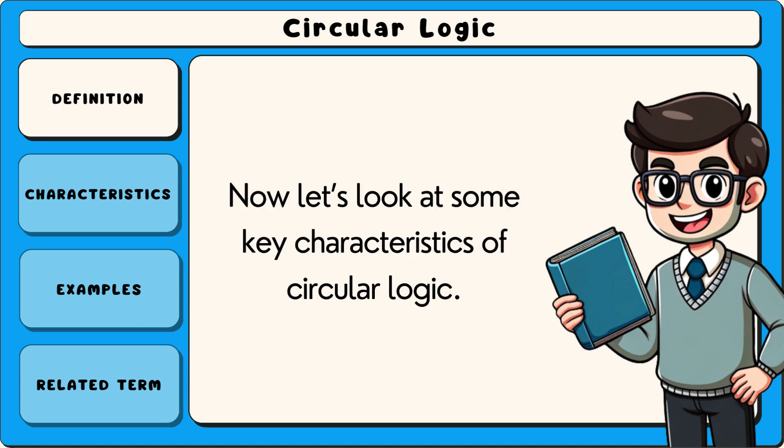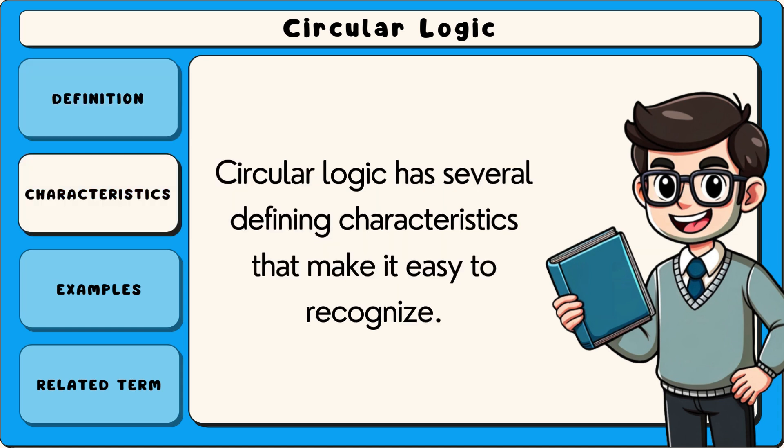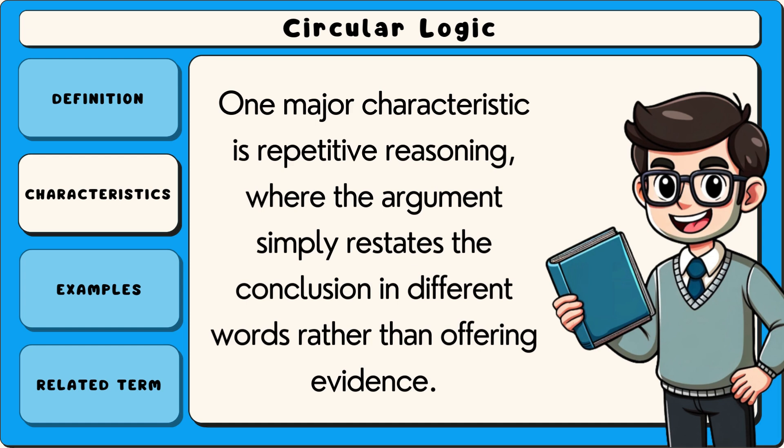Now let's look at some key characteristics of circular logic. Circular logic has several defining characteristics that make it easy to recognize. One major characteristic is repetitive reasoning, where the argument simply restates the conclusion in different words rather than offering evidence.